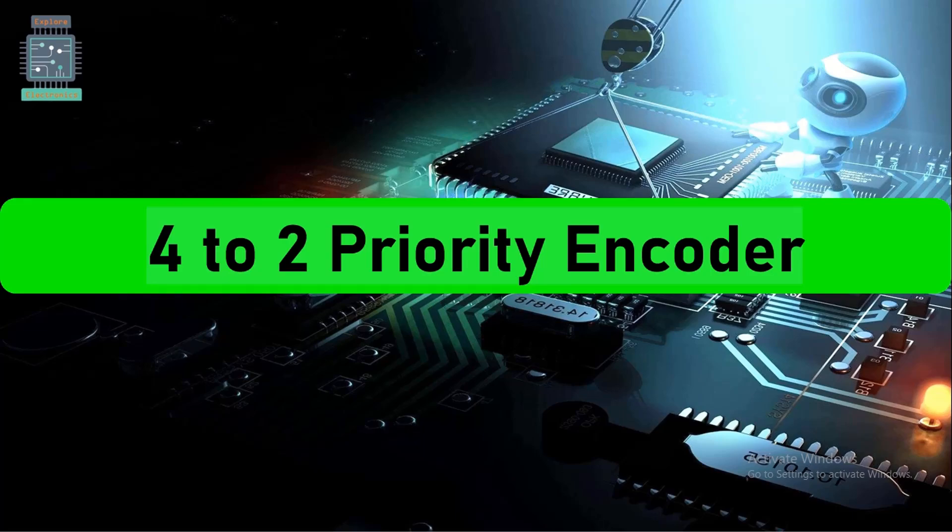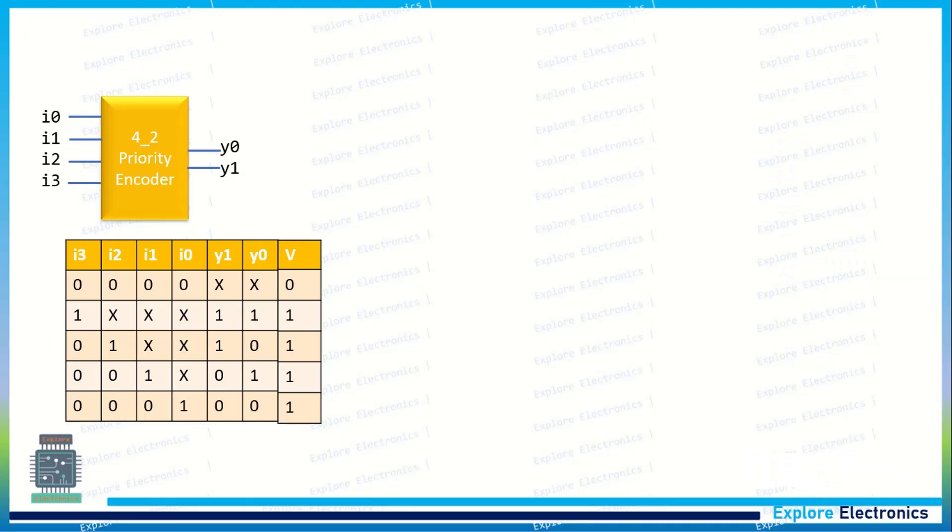You can see the block diagram here. We have i0, i1, i2, i3 as inputs and y0, y1 are outputs. This priority encoder will be having highest priority for i3 and lowest priority for i0.